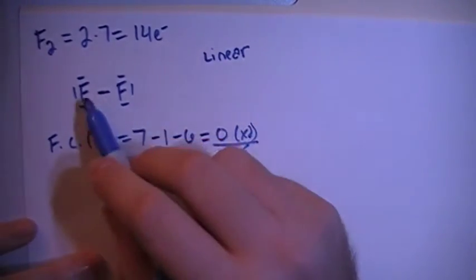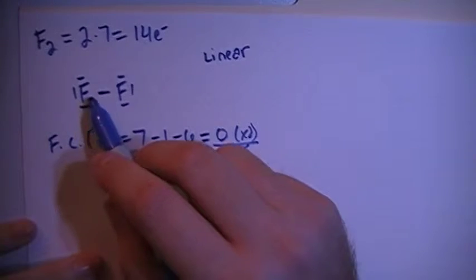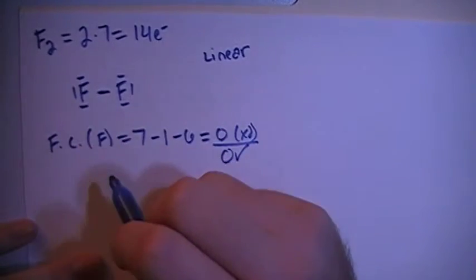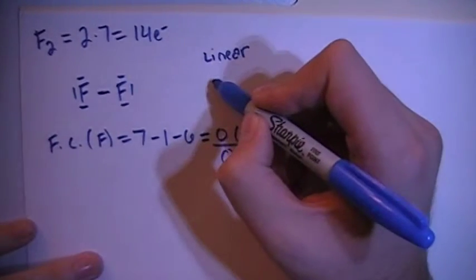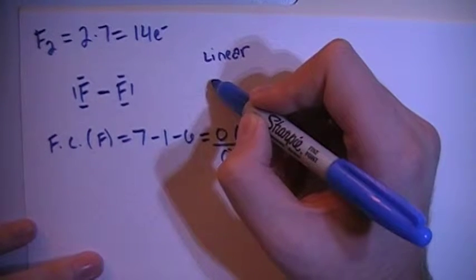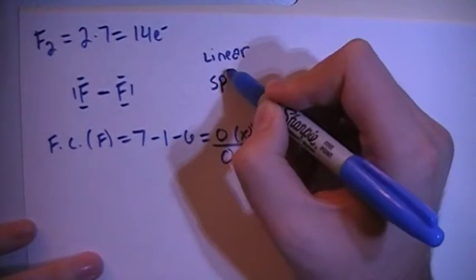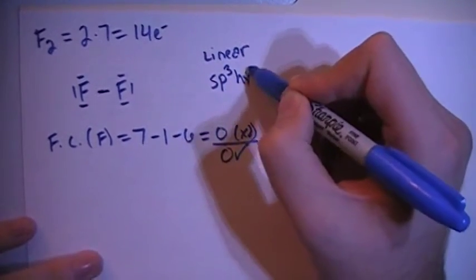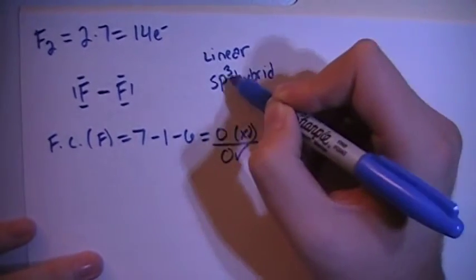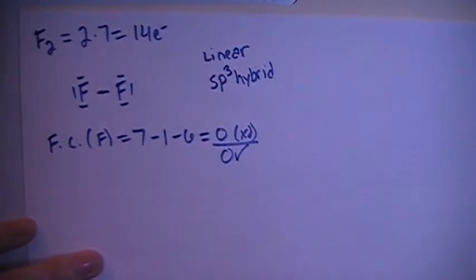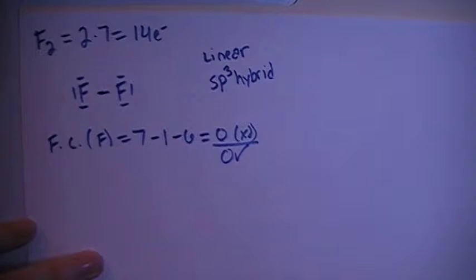In terms of hybridization, looking at each of the fluorines, there's 1, 2, 3, 4 electron groups. So that means it's going to need four hybrid orbitals, so sp3 hybrid, because you need one s and three p's for a total of four orbitals for four electron groups.